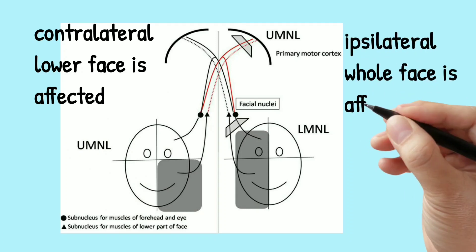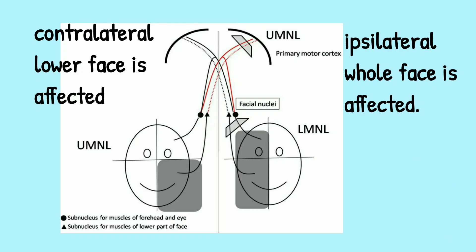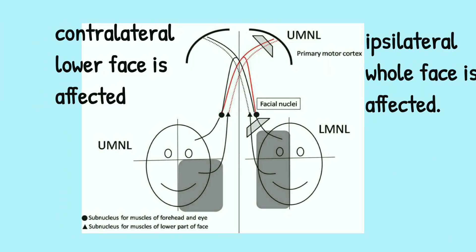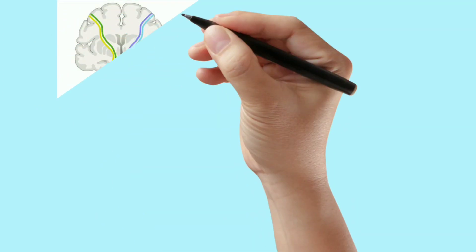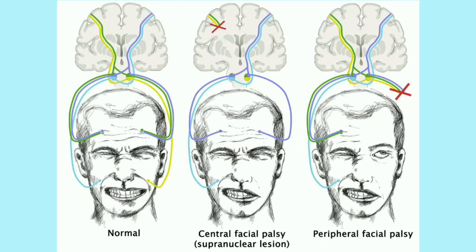In LMN type, the ipsilateral half of the face is affected. Why the ipsilateral side? It is because the facial nerve doesn't cross to the opposite side after emerging from the facial nerve nucleus. Why is the complete half of the face affected and the upper half not spared? As the damage is below the facial nucleus, upper facial muscles don't receive a signal from the cortex for it to be spared. This picture clearly depicts why in UMN type, the contralateral lower half is affected, and in LMN type, the ipsilateral half of the face is affected.